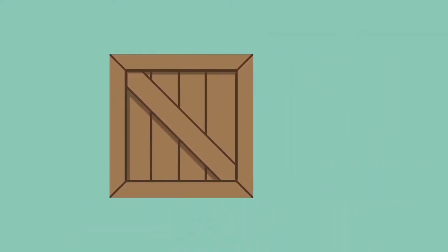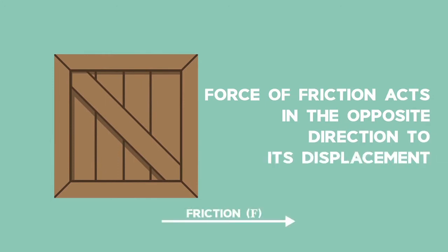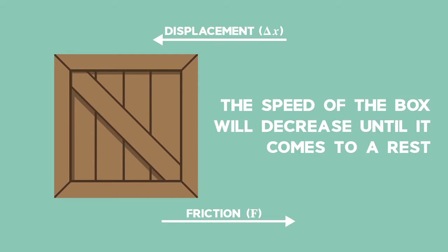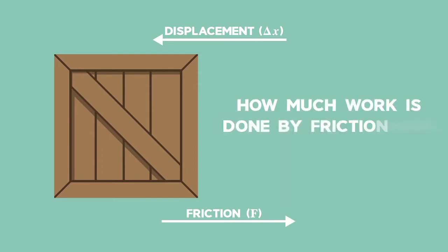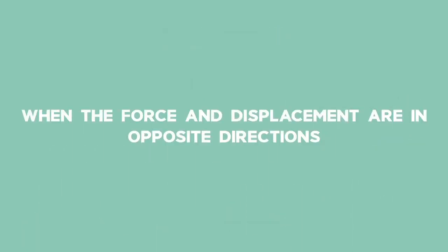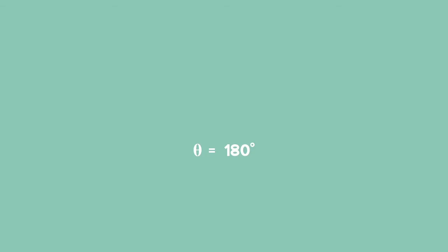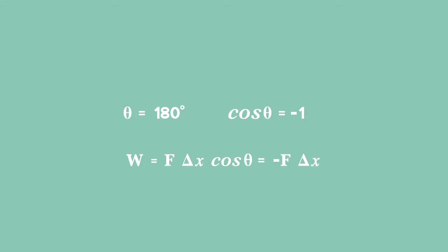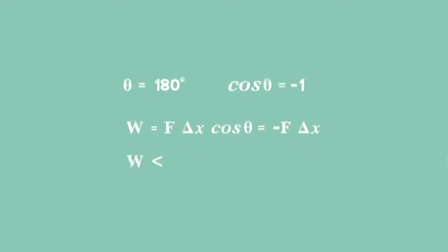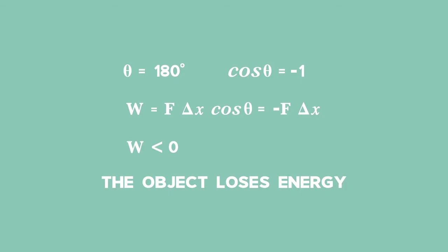When a crate slides on a rough surface, the force of friction acts in the opposite direction to its displacement. The speed of the box will decrease until it comes to rest. When the force and displacement are in opposite directions, theta is equal to 180 degrees. The cosine of 180 degrees is negative 1, so the work done equals the magnitude of the force times the magnitude of the displacement times negative 1. The work done by the force is negative, meaning the object loses that amount of energy.